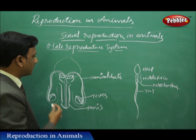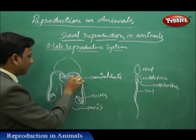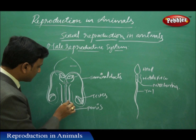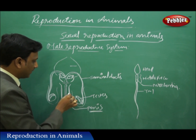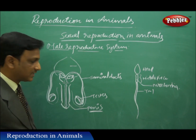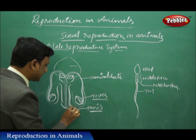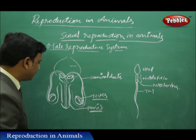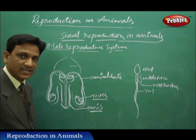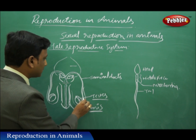Here we have the human male reproductive system. The human male reproductive system is located in the lower abdomen, near the urinary bladder. The different parts include the penis, and the two main organs which produce the reproductive cells are the testes. There are a pair of testes enclosed by a thin membranous sac. These testes have special cells which produce the male gametes.